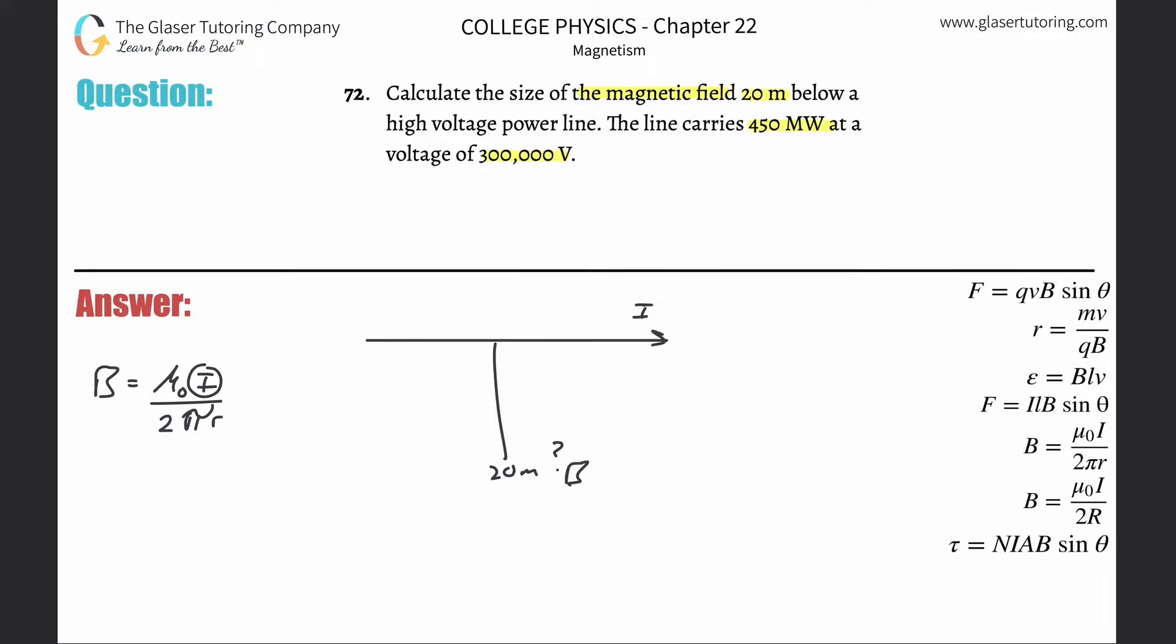Here's the thing: what's the current? They didn't tell you. So now what you got to think about is, well, how in the world is power and voltage related to current? Oh right, P=IV. Power is equal to the current multiplied by the voltage.